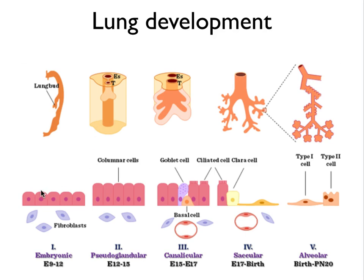In this row you can see what happens to the cells. This lung bud is first covered with sort of pre-epithelial cells. And when this lung bud starts to sprout more divisions, the lung bud will be covered with columnar cells.